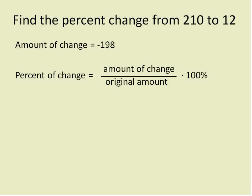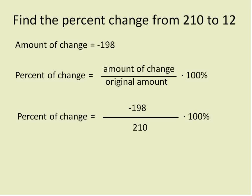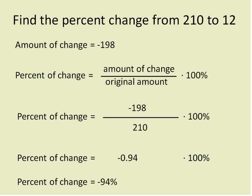In the percent of change equation, the amount of change goes on top — it's negative 198 — and the original amount, 210, goes on the bottom. The biggest place people make mistakes is getting the original amount correct: it's how much it started at. Negative 198 divided by 210 gives us negative 0.94. Multiply times 100 and that gives us about negative 94%. So it decreased by 94%, which makes sense going from 210 down to 12.